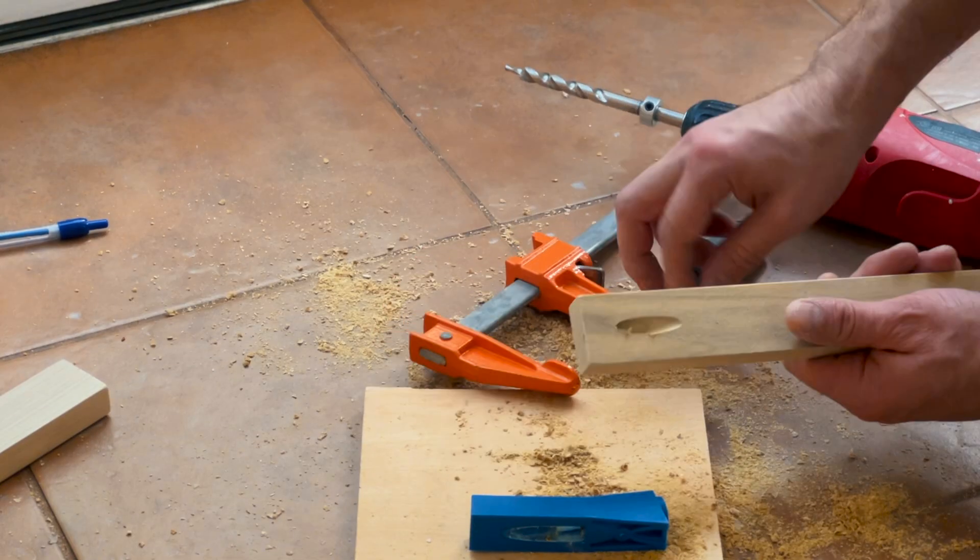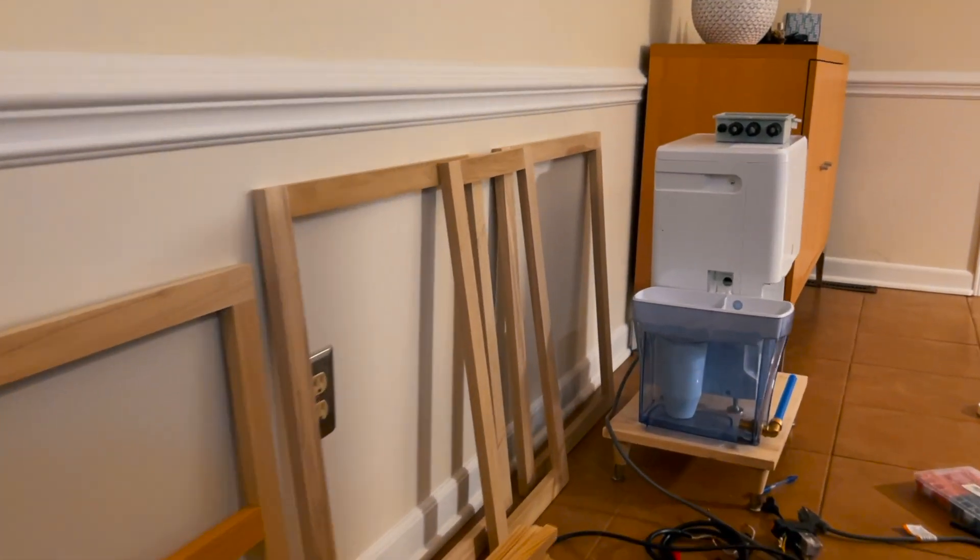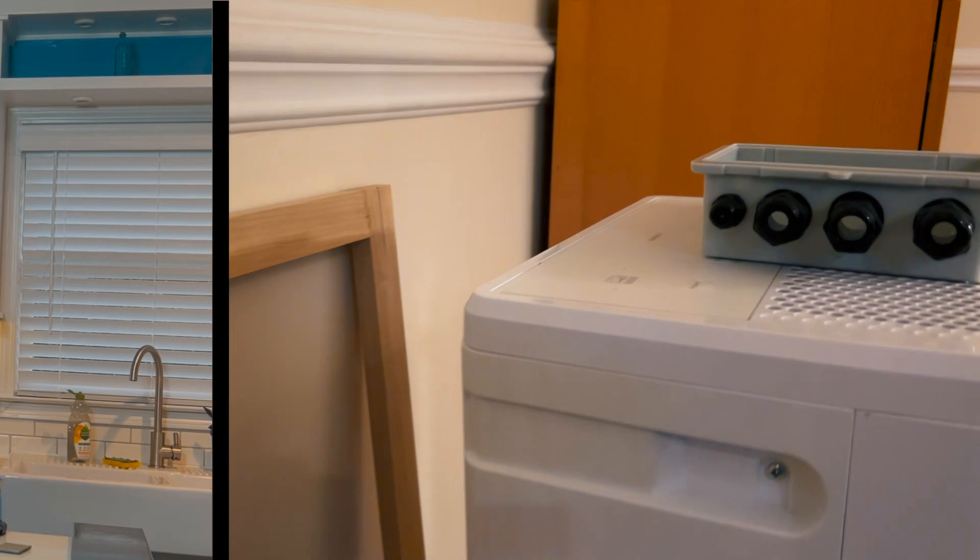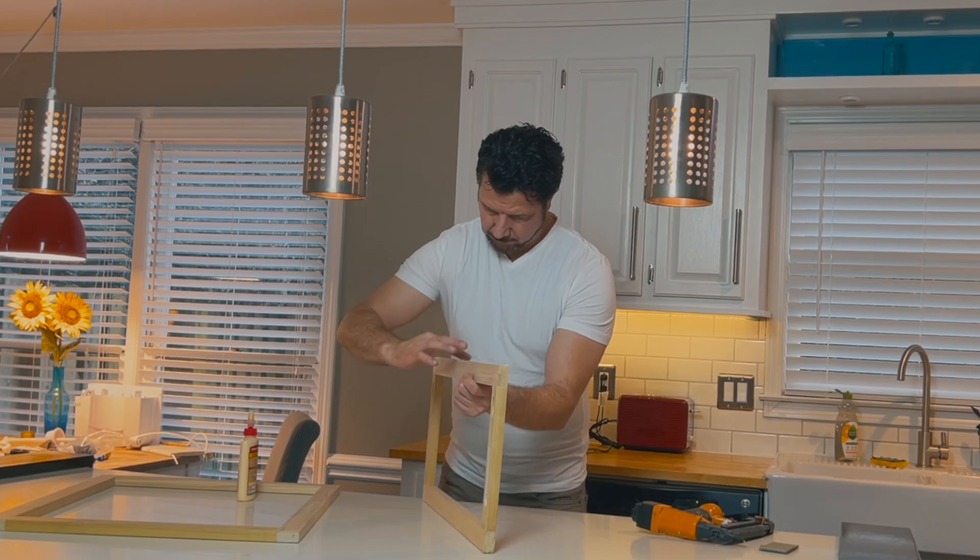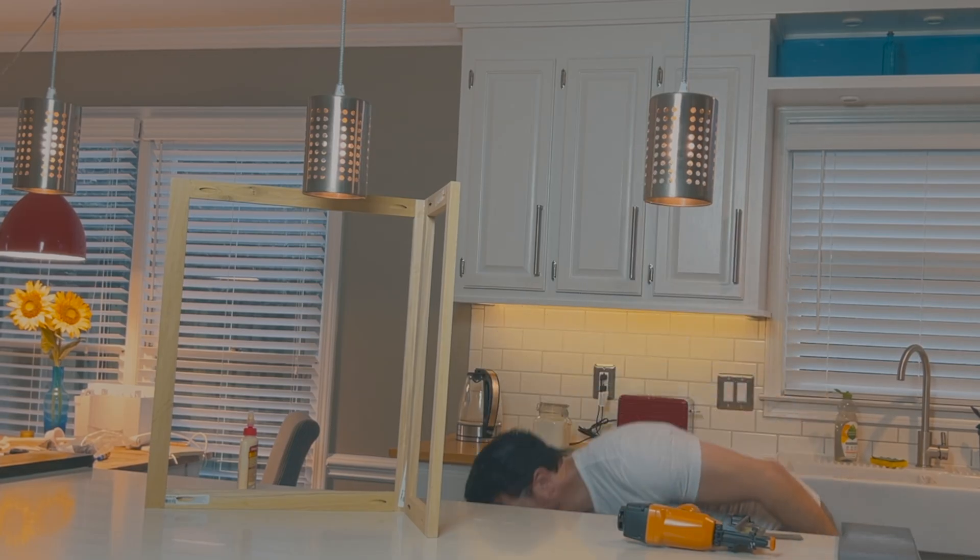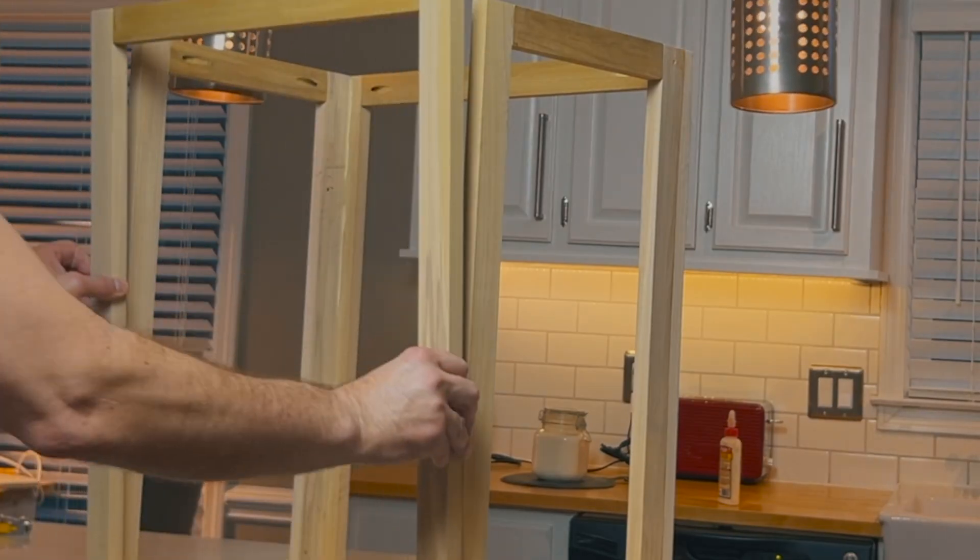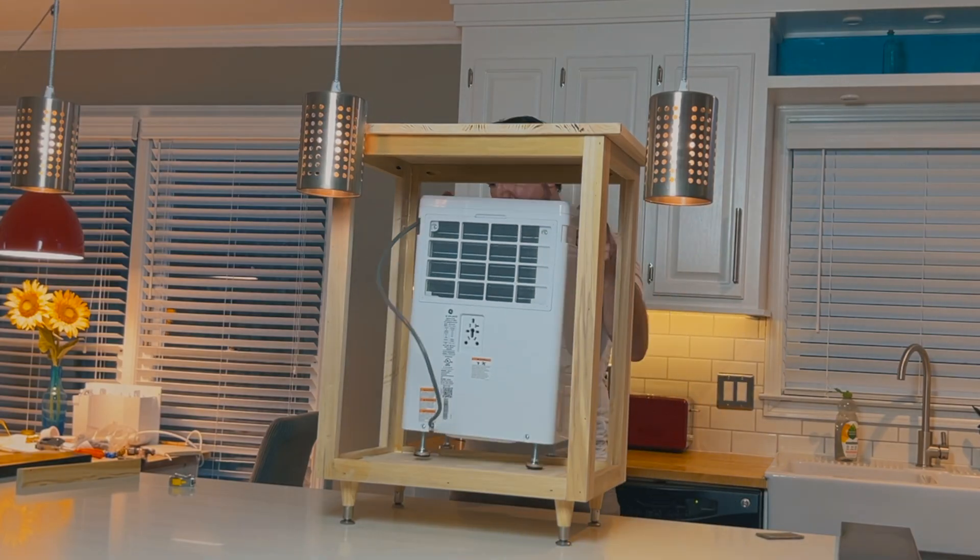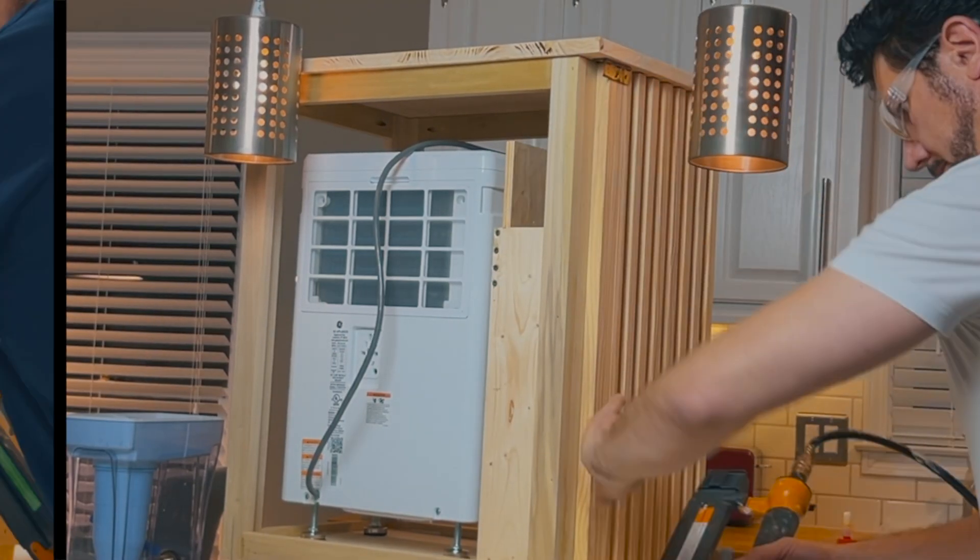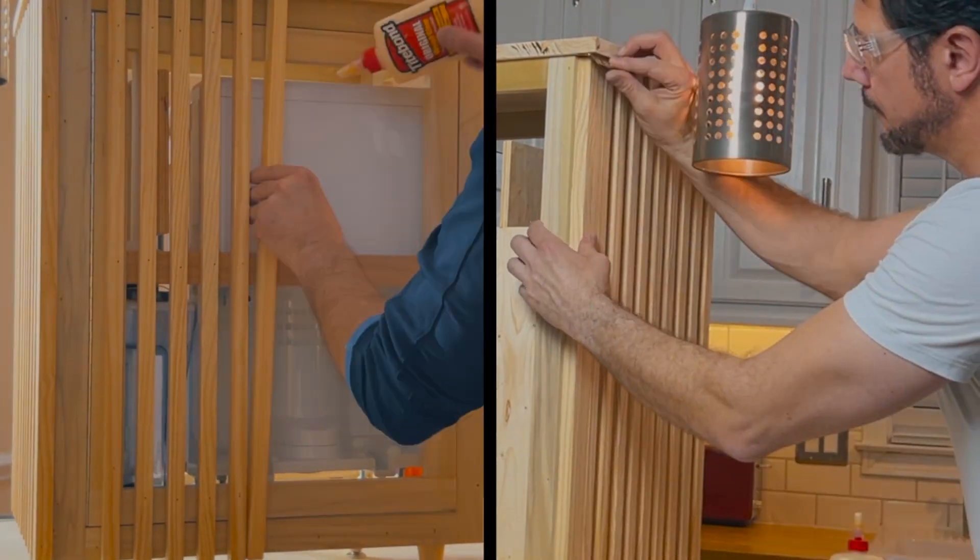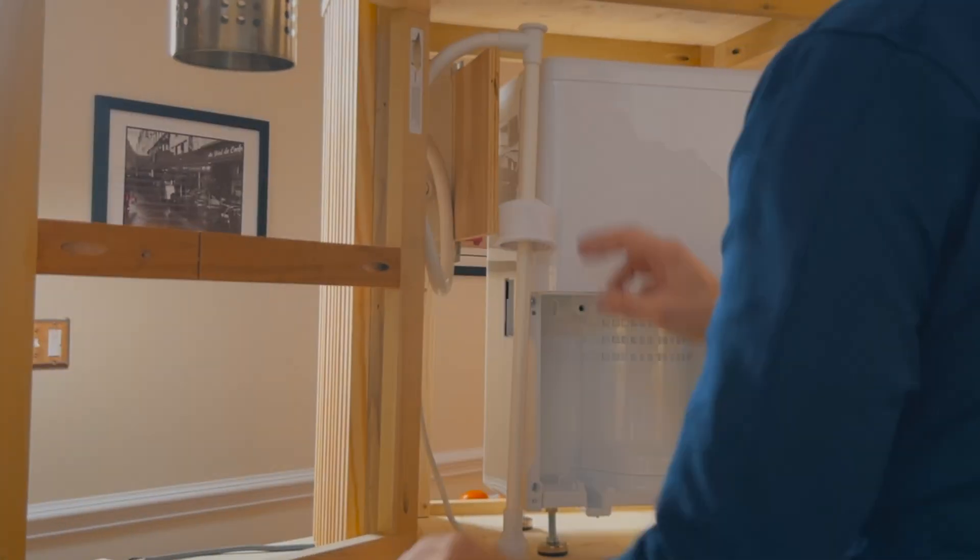Now I just need to build an enclosure to put everything together. First I'm building these wooden frames and then I glue and nail it together. This is a task for the bigger nail gun. I find it easiest to clean the wood glue right off before it gets too dry. Of course the dehumidifier needs a lot of air circulation and that's why I went with this slotted design.